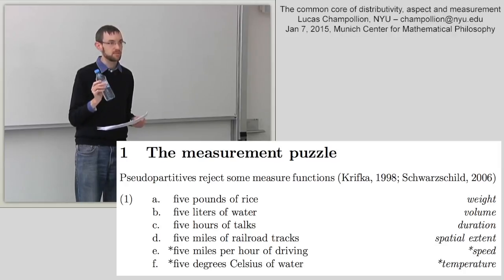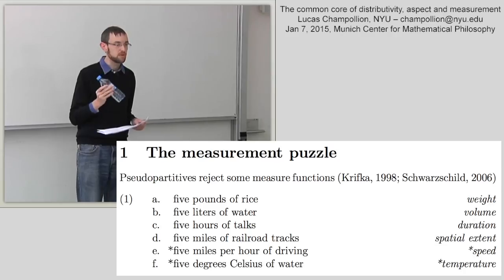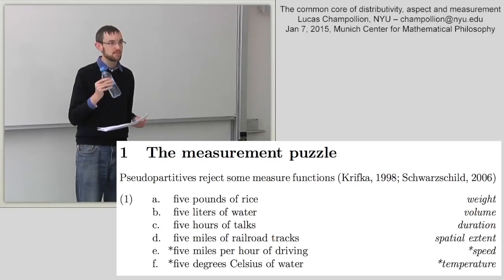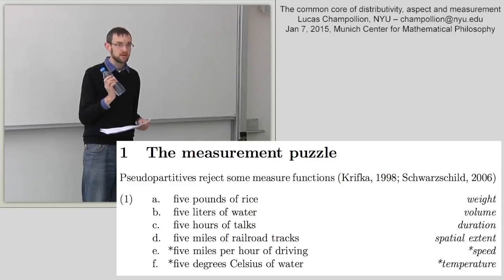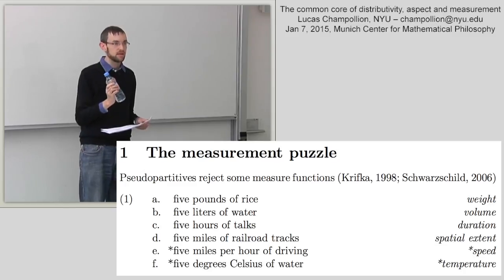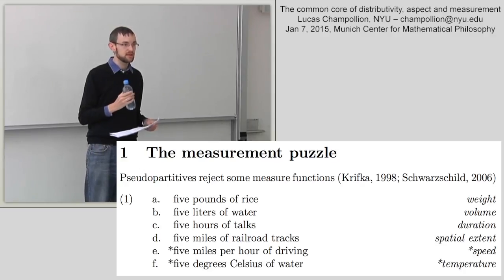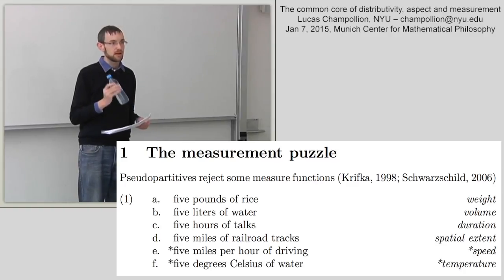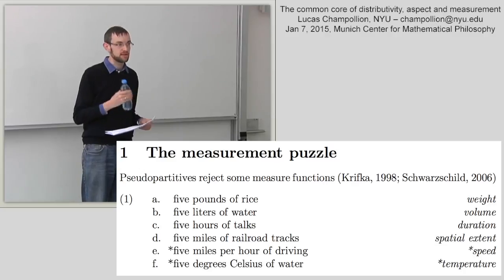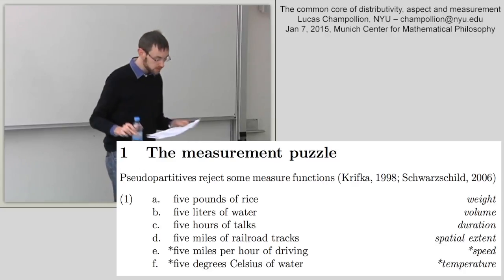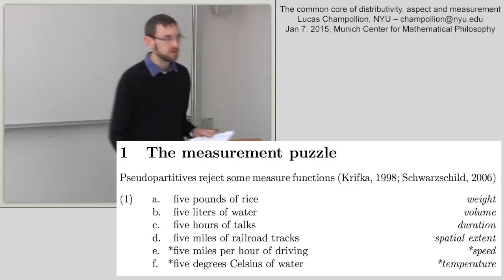People like Krifka and Schwarzschild have noticed that not every measure function is admissible in pseudo-partitive constructions. You can say 'half a liter of water in this bottle' using volume, or 'half a kilo of water' using weight. But if you try to use temperature — 'there's 10 degrees Celsius of water in this bottle' — something goes wrong. The question is why some measure functions are admissible and others are not.